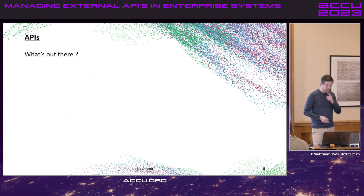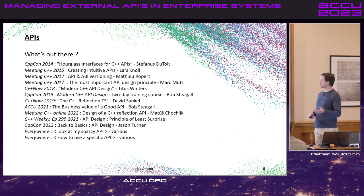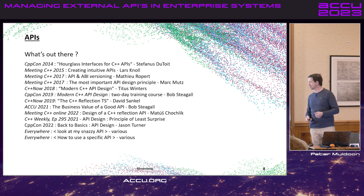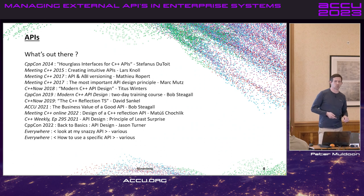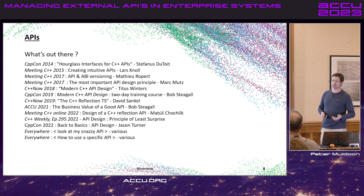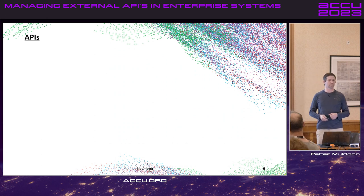When I was preparing this talk, I searched for API conference talks and found topics like the Hourglass Interface, creating APIs, design principles, the business value of a good API, and C++ reflection. All of these are from the producer side — everybody's out there creating tons of APIs. There's a talk here by Andreas Weiss about easy-to-use, hard-to-misuse APIs. But who are these APIs being written for? They're for the person pulling a system together — the consumer side — and we don't see many talks on that.